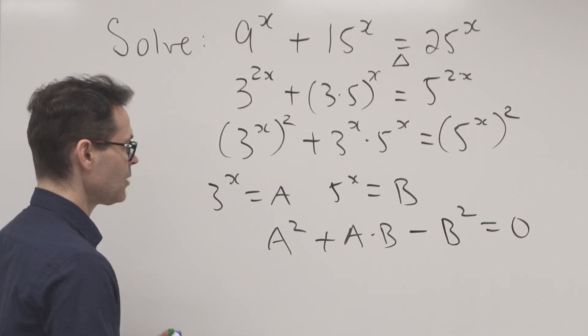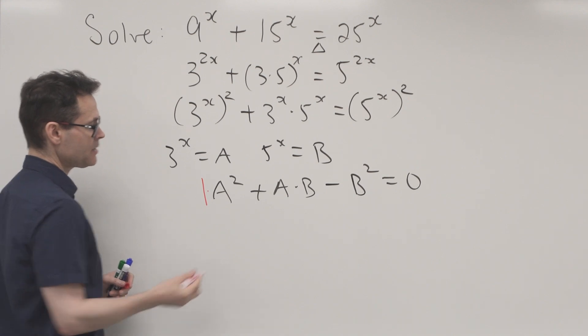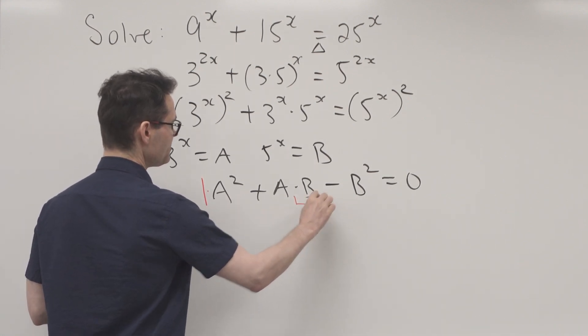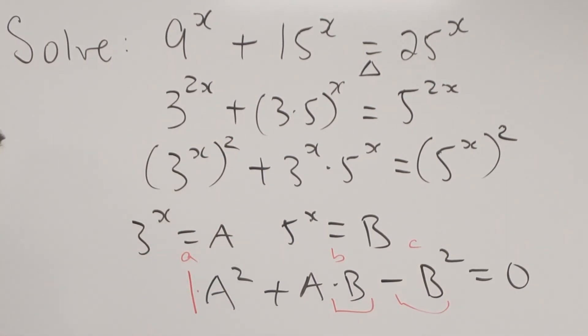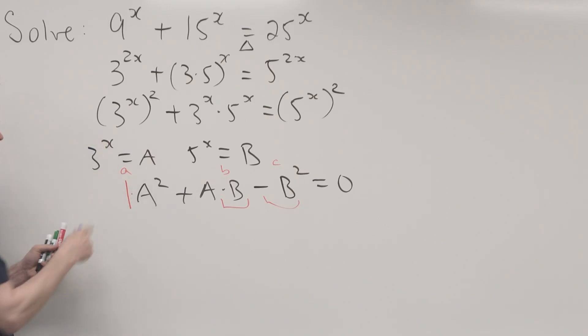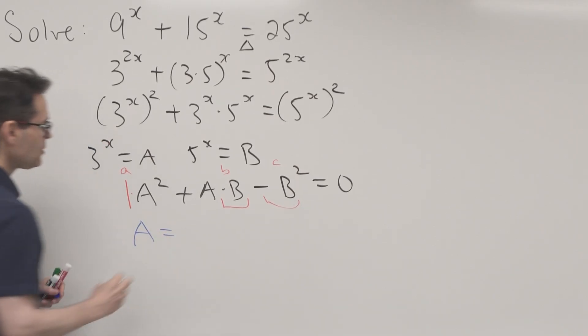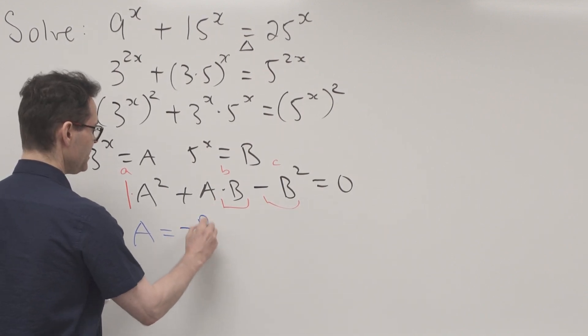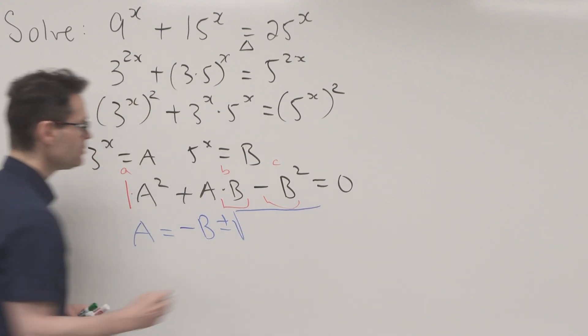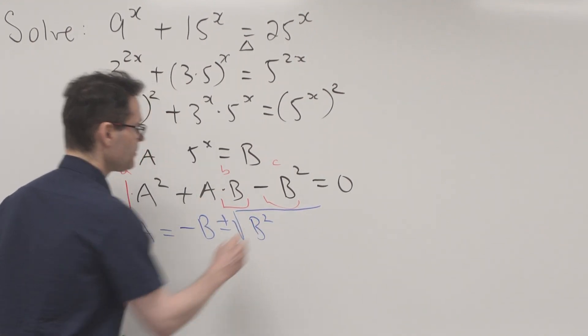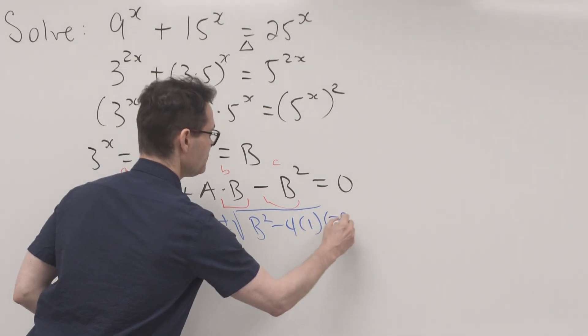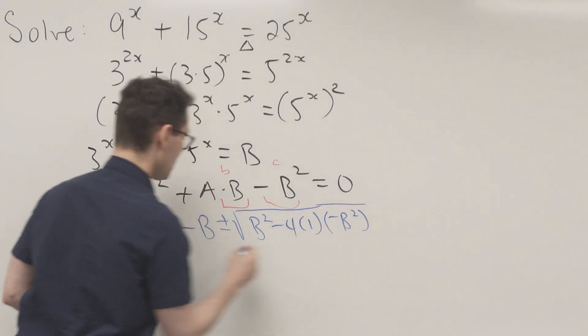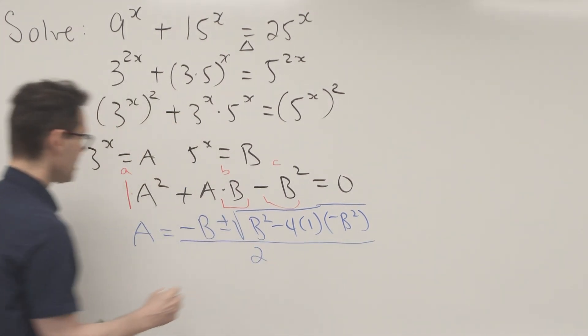I can solve this using the quadratic formula. If I'm treating A as my unknown, then B becomes the coefficient. Using the quadratic formula: A = [-B ± √(B² - 4(1)(-B²))] / 2.